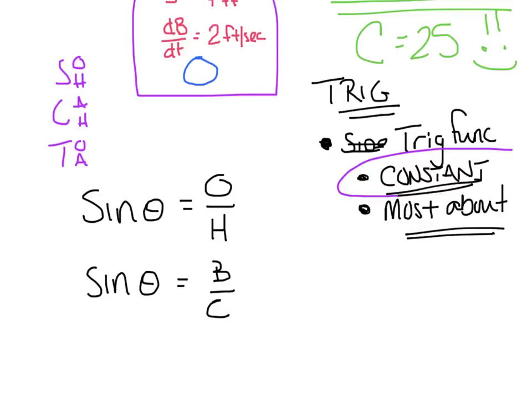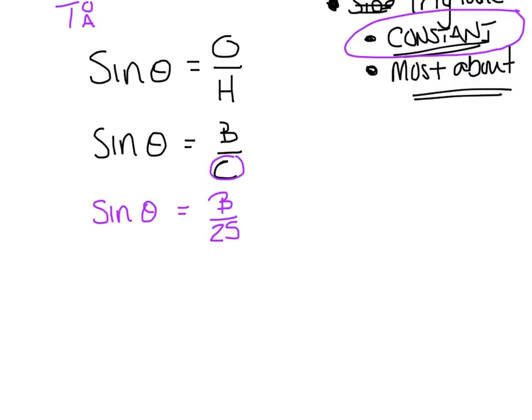You can plug the constant in before taking the derivative. Side C was a constant, so I rewrite this as sine(θ) = B/25. To avoid dealing with fractions, I'll cross-multiply: 25 sin(θ) = B. Now I'll bracket this in and take its derivative with respect to time.